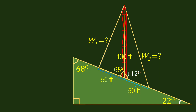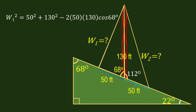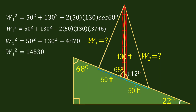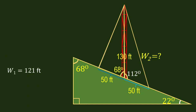Using the law of cosines, W1² is equal to 50² plus 130² minus 2 times 50 times 130 times cosine 68 degrees. The value of cosine 68 degrees is 0.3746. So W1² is equal to 14,530. Therefore, W1 is equal to the square root of 14,530, which is 121 feet.